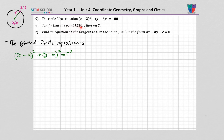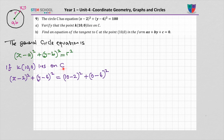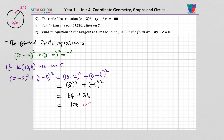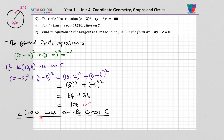To verify that point K lies on the circle, this is x and this is y. If we substitute x and y into the equation of the circle and get 100, then K lies on the circle. Substituting x equals 10 and y equals 0: we get 8 squared plus 6 squared, which is 64 plus 36 equals 100. Therefore K at point 10 0 lies on circle C.